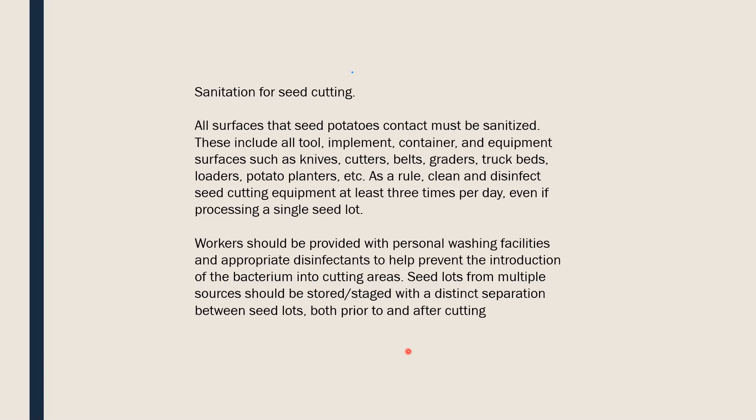Workers should be provided with personal washing facilities, changing facilities, and overalls or lab coats that can be changed frequently. Hands and handling surfaces should be sanitized regularly. Seed lots from multiple sources should be stored with distinct separation between seed lots, both prior to and after cutting. Infected lots should be kept separate and a distance maintained to prevent cross-contamination.